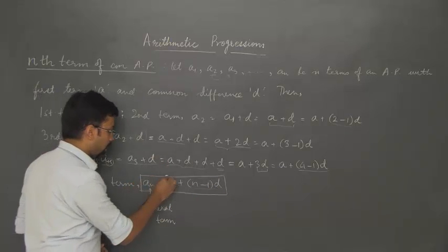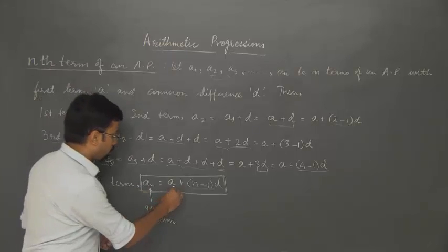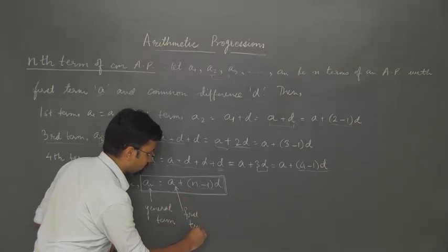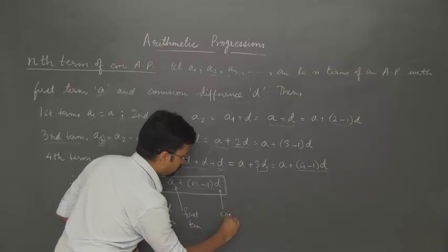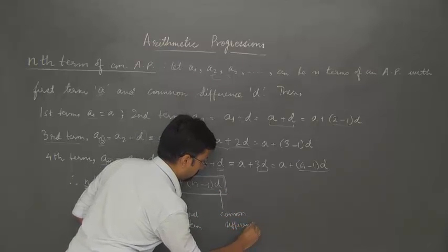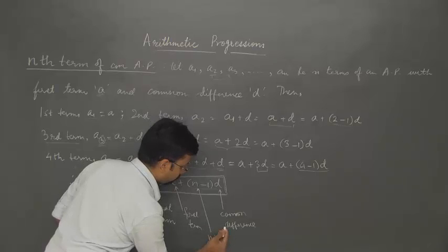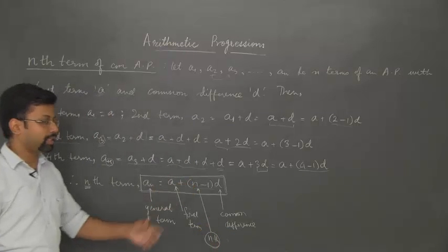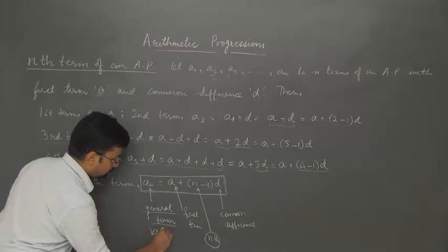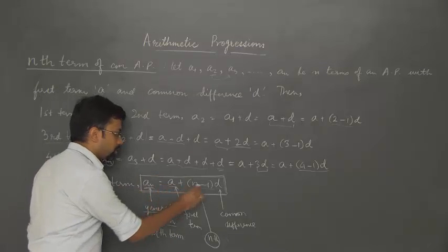This formula is used to obtain the nth term of any given AP, where a is the first term, d is the common difference, n is the position value we are finding, and an is the general nth term. So any term of an AP can be obtained this way if we know the first term and the common difference.